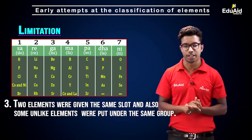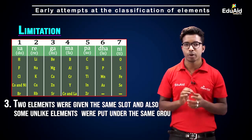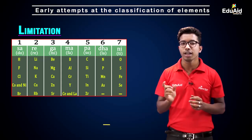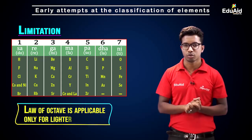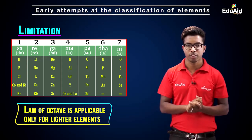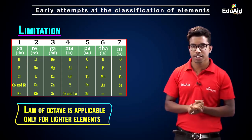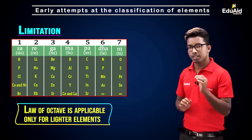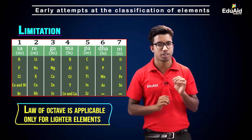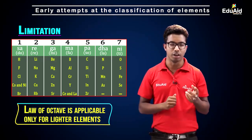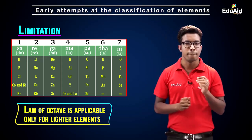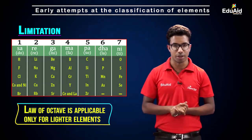The Law of Octaves is useful only for lighter elements and is applicable only up to calcium. So that's all for this session — we have discussed two important early attempts at classification of elements by Döbereiner and Newlands. In the next session we will discuss Mendeleev's periodic table.